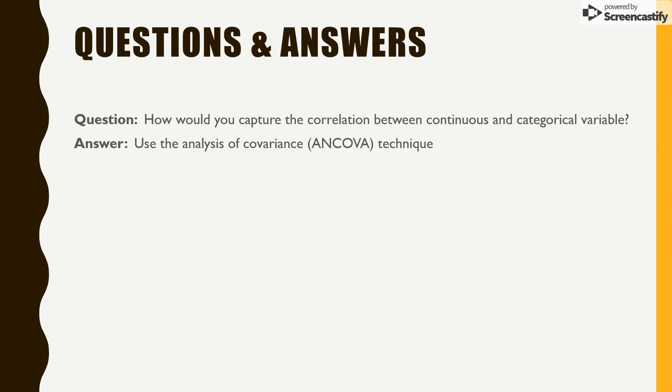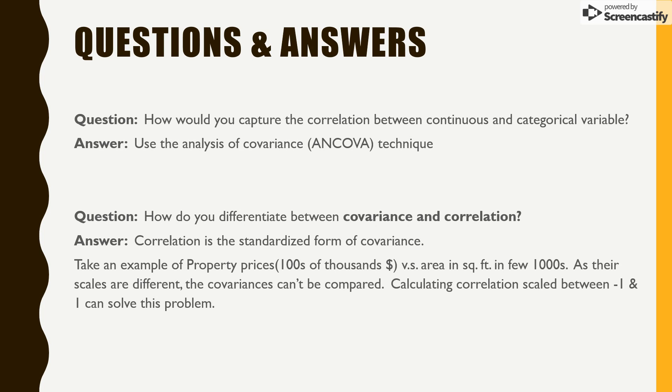Now, on the same lines, how do you differentiate between covariance and correlation? Please note that correlation is a standardized form of covariance. Take an example of property prices, which is hundreds of thousands of dollars, half a million, million, versus area of the property, which is in a few thousands, two thousand, three thousand, five thousand. Please note that the scales are different and therefore the covariances can't be compared. Calculating correlation scaled between minus one and one can solve this problem.